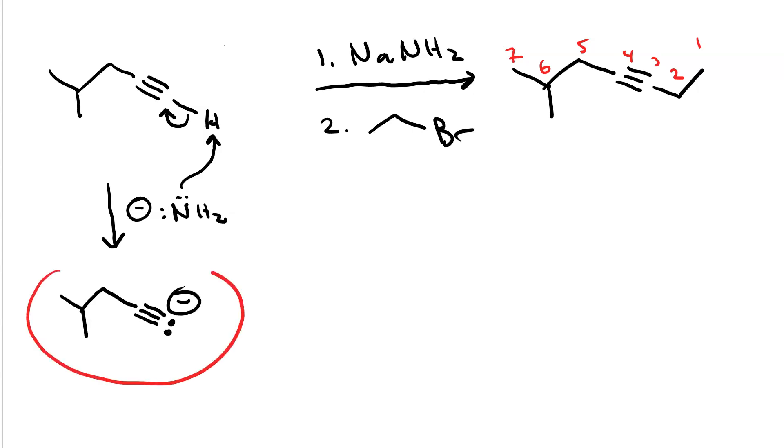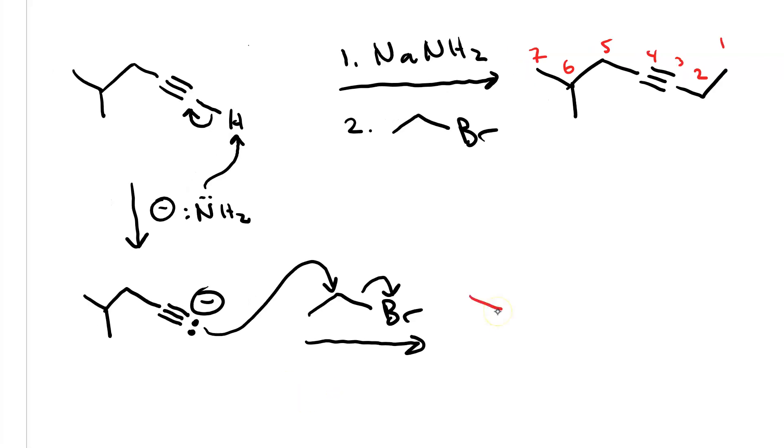This alkynide is a strong nucleophile. In our ethyl bromide the alpha carbon is an electrophile. Thus we get SN2 attack and here is our product.